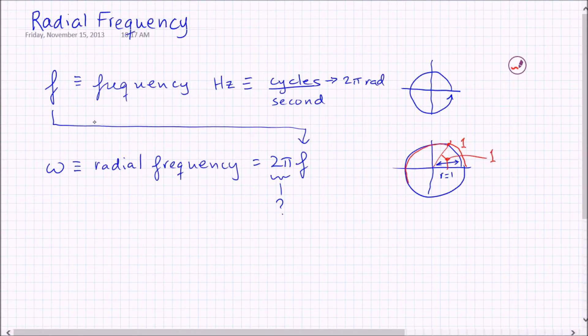So if you go all the way around the circle, you've gone two pi radians equals one cycle.